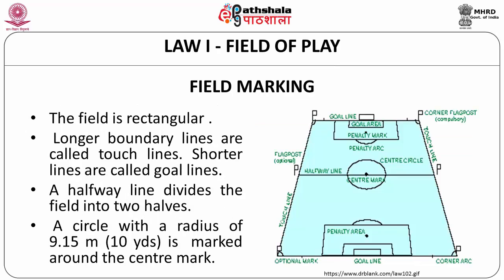Field marking: the field should be rectangular in shape. There are two boundary lines — the longer boundary lines are called touch lines and the shorter boundary lines are called goal lines. A halfway line divides the field into two halves. A circle with a radius of 9.15 meters, which is equal to 10 yards, is marked around the center mark.